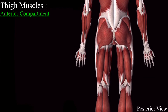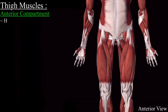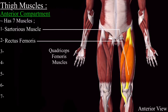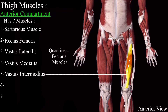We will begin our discussion with the anterior compartment. The anterior compartment of the thigh contains seven muscles. Out of these seven muscles, five are the true muscles of the thigh anterior compartment. These five muscles include the sartorius muscle and four large quadriceps femoris muscles: rectus femoris, vastus lateralis, vastus medialis, and deep to these is the vastus intermedius muscle.